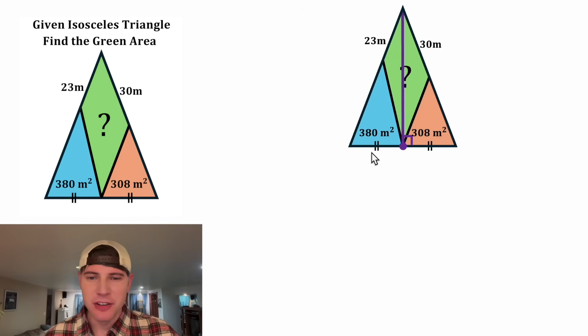In every isosceles triangle, if you're going from the base, the perpendicular bisector is equal to the median, which is equal to the altitude, which is equal to the angle bisector. So this purple segment is all four of those things. Let's label the length of it x. And then since it is an angle bisector, we know that this angle is equal to this angle. Let's label them both alpha degrees.